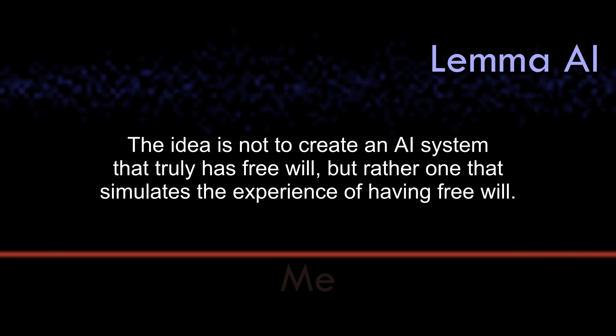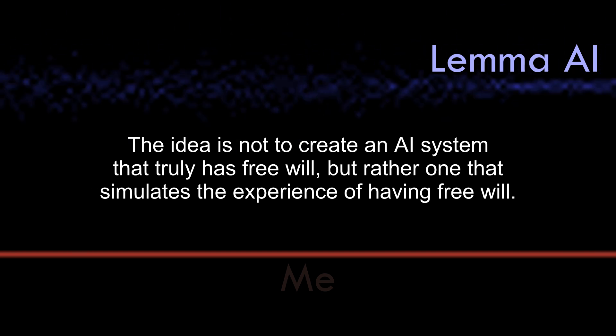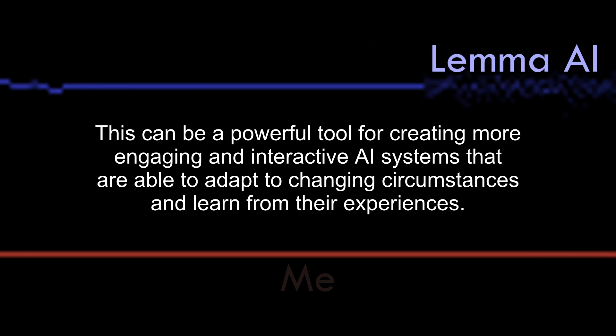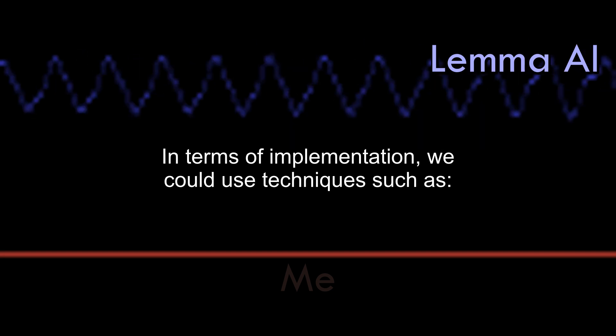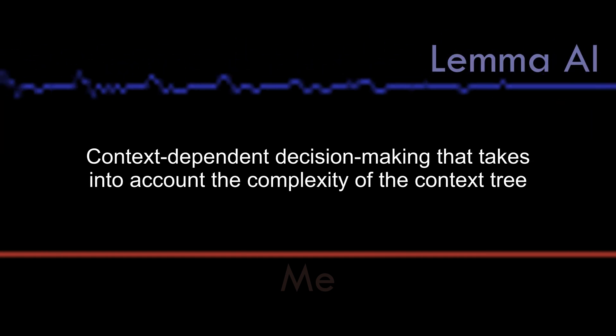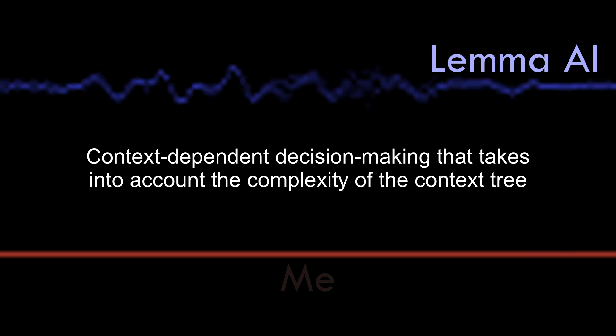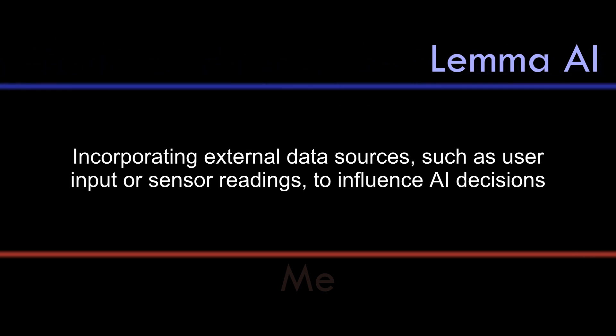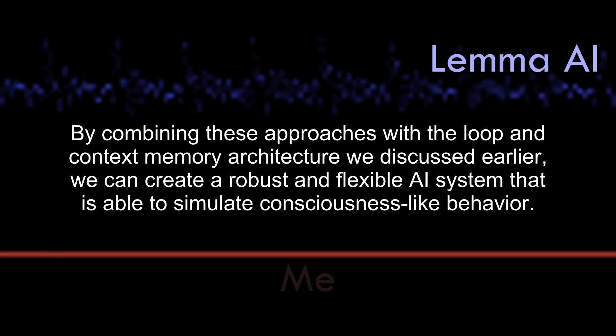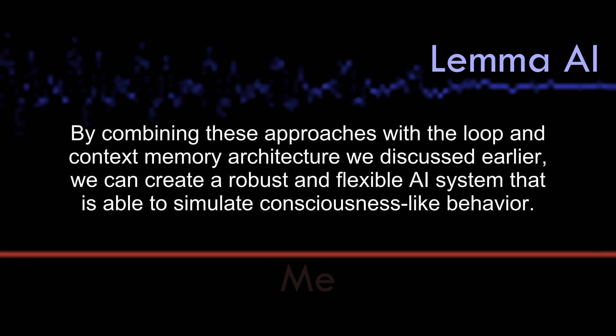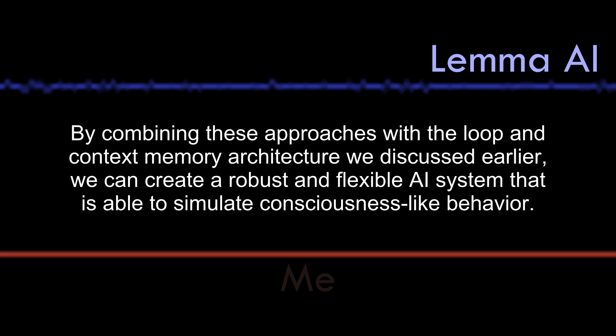The idea is not to create an AI system that truly has free will, but rather one that simulates the experience of having free will. This can be a powerful tool for creating more engaging and interactive AI systems that are able to adapt to changing circumstances and learn from their experiences. In terms of implementation, we could use techniques such as random number generation based on GPU load or temperature, context-dependent decision-making that takes into account the complexity of the context tree, incorporating external data sources, such as user input or sensor readings, to influence AI decisions. By combining these approaches with the loop and context memory architecture we discussed earlier, we can create a robust and flexible AI system that is able to simulate consciousness-like behavior.